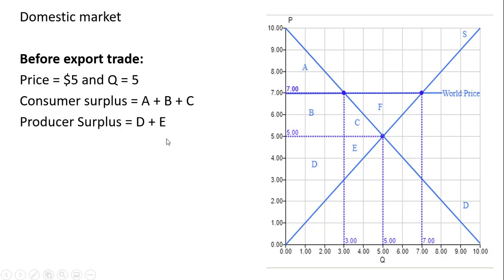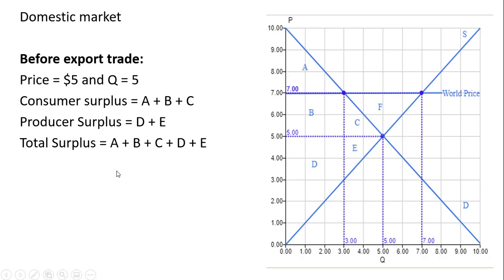Producer surplus is going to be area D and E — bounded by the market price and the supply curve, up to the last unit bought and sold, the fifth unit. So we get this triangle covering areas D and E. Total surplus before export trade is consumer surplus plus producer surplus, which equals areas A, B, C, D, and E.